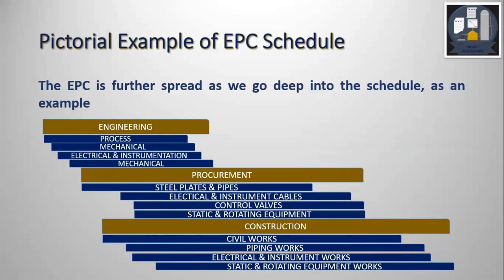We see the pictorial depiction of EPC with the bars for Engineering, Procurement and Construction. The blue bars show Engineering further subdivided into Process, Mechanical, Electrical and Instrumentation — the different disciplines of Engineering. For Procurement, we see Steel Plates and Pipes, Electrical and Instrument Cables, Control Valves, Static and Rotating Equipment — these are just examples.